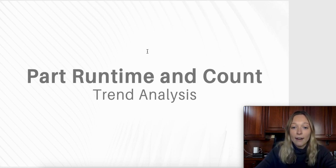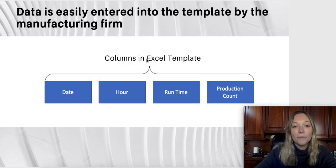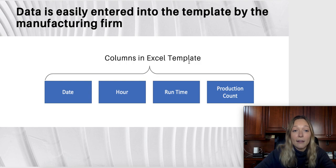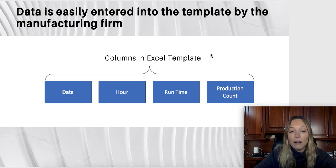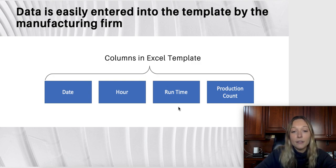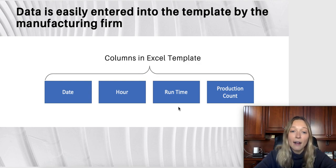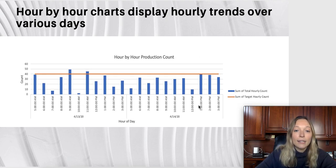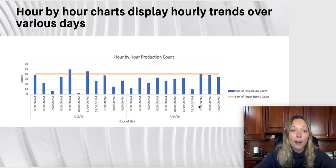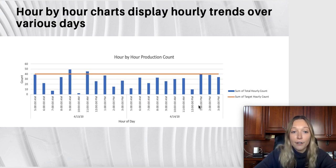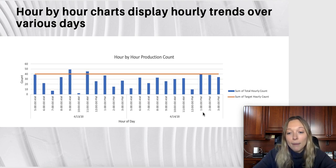Starting with the trend analysis, which analyzes trends over a period of time, this is the type of input a company would enter into the template — just the date, the hour, which Excel can also pull from when the data was inputted, and the runtime and production count in that hour. The template then turns that information into charts, including hour-by-hour charts that display hourly trends over a series of days, broken up by day.